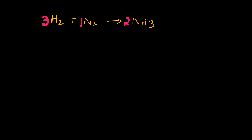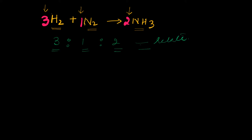Let's take a simple reaction in which hydrogen and nitrogen react to form ammonia. The coefficients given here are 3:1:2. What do these coefficients represent? First, how are they related to each other, and what information can we get from them? Third, how can we manipulate them mathematically?